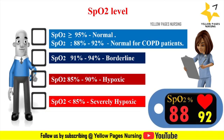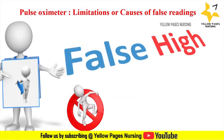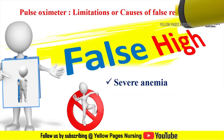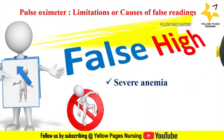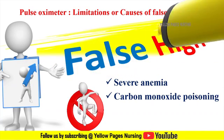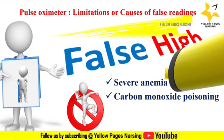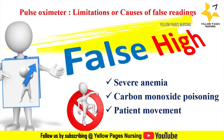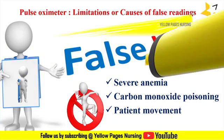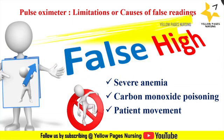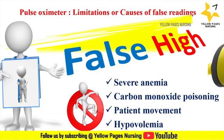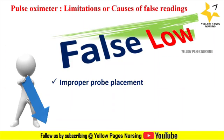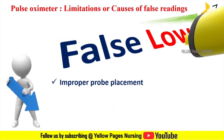Next are the limitations or causes of false readings in pulse oximetry. False high readings can be due to severe anemia — decreased red blood cells — and carbon monoxide poisoning, as carbon monoxide has an affinity for hemoglobin 210 times greater than oxygen. Patient movement including shivering and poor probe placement can also affect readings. False high readings may also result from hypovolemia. False low readings can be caused by improper probe placement and hypothermia due to decreased perfusion.